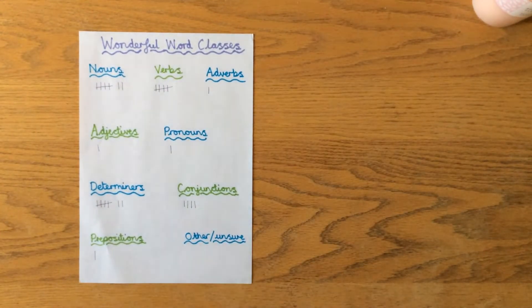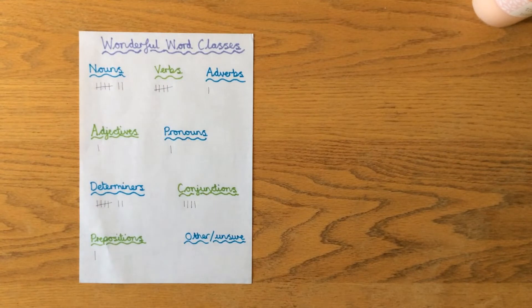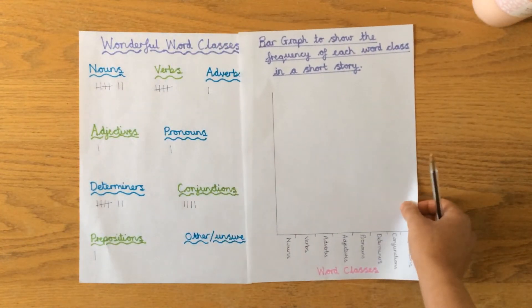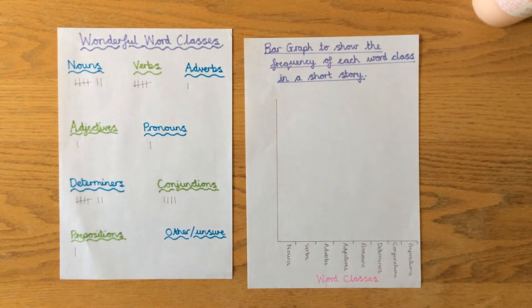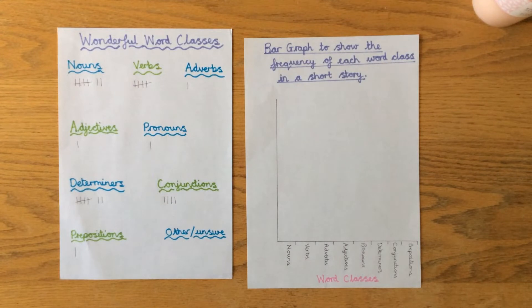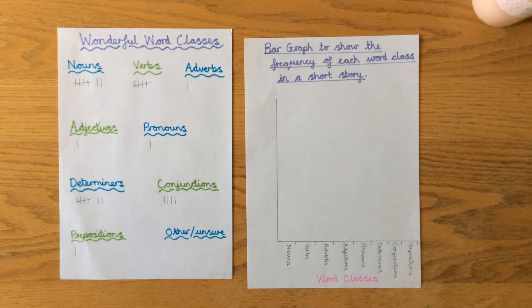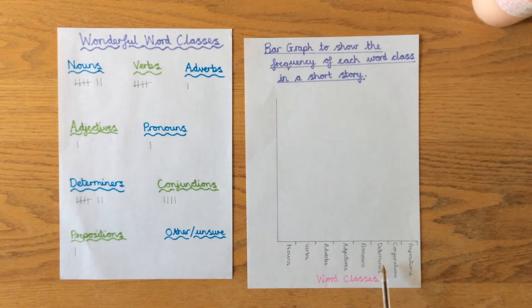Once you've got your tally chart, you can do a little bit more maths — we're linking three things today: reading, grammar, and maths. You are going to turn your tally chart into a bar chart. I've already prepared my bar chart to help me. At the top I've remembered to use a title, and in my title it tells me what the bar graph shows: 'Bar graph to show the frequency of each word class in a short story.' Frequency means how often they're used.